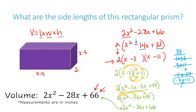Hopefully this video helped you understand that when calculating the volume of a rectangular prism, you use length times width times height. And to undo that — starting with the volume to find the three side lengths — you factor down that trinomial, breaking it into three terms that multiply together to give that answer.